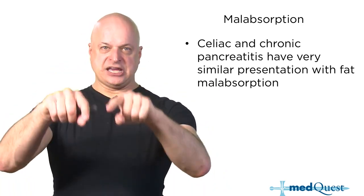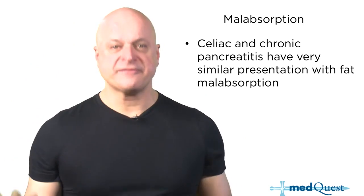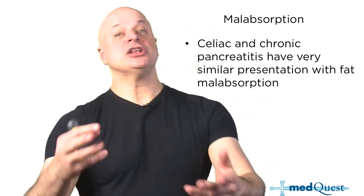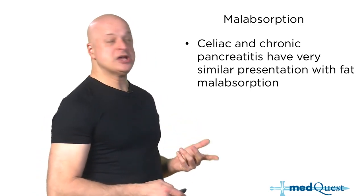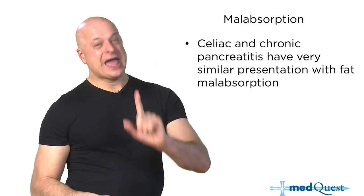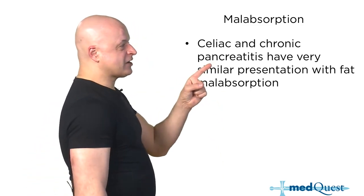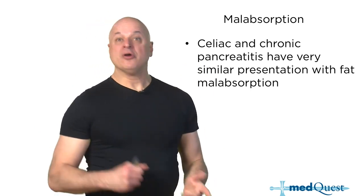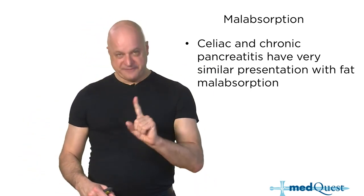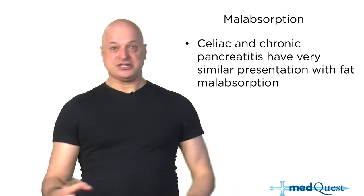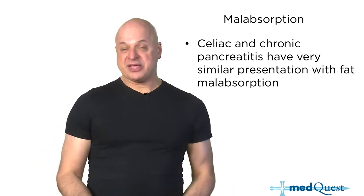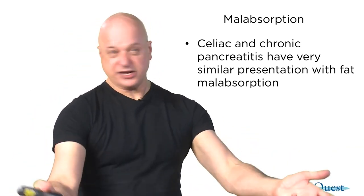Chronic pancreatitis means no bicarbonate, no amylase, no lipase — the big consequence is fat malabsorption. Whipple's disease is a systemic inflammatory autoimmune reaction to Tropheryma whipplei, which is an infection. Tropical sprue is also an infection — you've been to the tropics and picked up a bug. You diagnose it with a biopsy seeing the bugs, and you treat it with antibiotics. Both are bacterial infections.